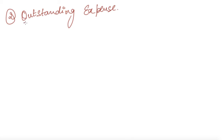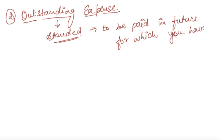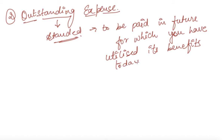Now coming towards outstanding expense. As the name says, outstanding expenses are those expenses which are yet to be paid — they are to be paid in the future — but for which you have already utilized their benefits today. So outstanding expenses are those expenses the payment of which is to be made in future for those benefits which you have utilized today.